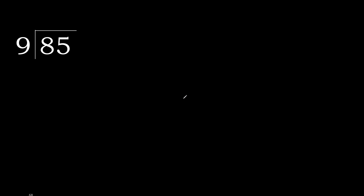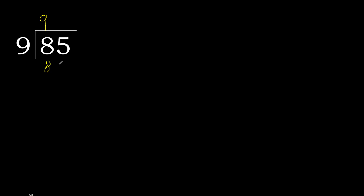85 divided by 9. 8 is less, therefore next. 85 is not less, therefore with 85. 9 multiplied by which number is nearest to 85 but not greater — 9 multiplied by 9 is 81, which is not greater.